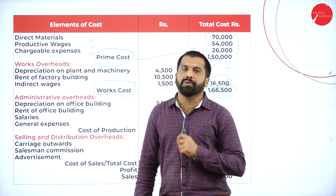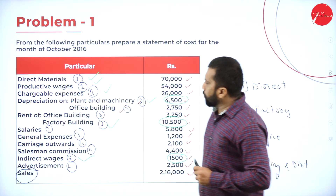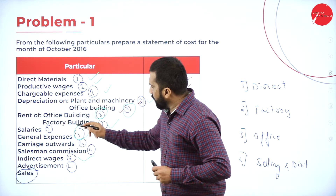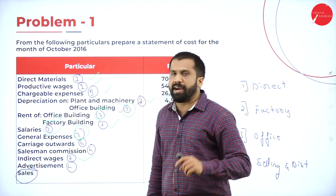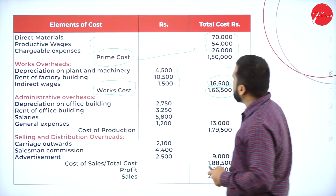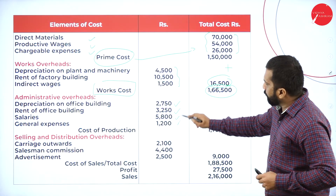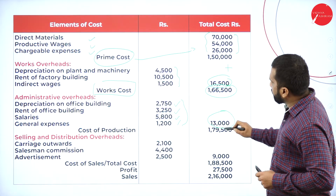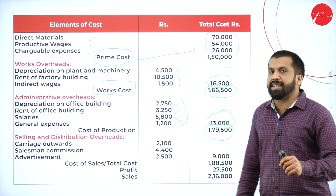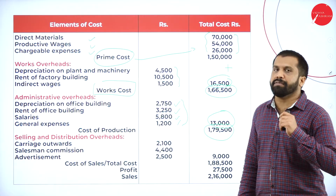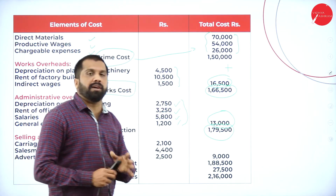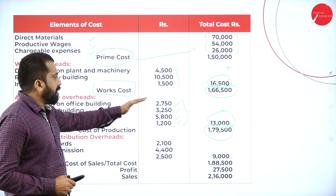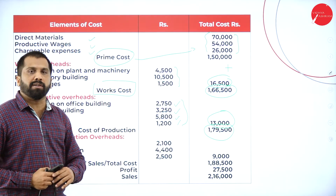Work cost is over. What is the next one? Administration overhead — third one. We have four items under office and administration. Add everything, you will get 13,000. 1,66,500 plus 13,000 gives you 1,79,500. Like this only you are supposed to do in the beginning. Later, this marking and numbering — nothing is required; you can do it on your own.